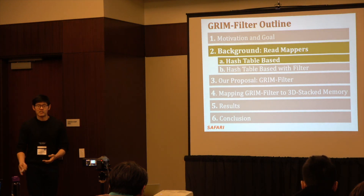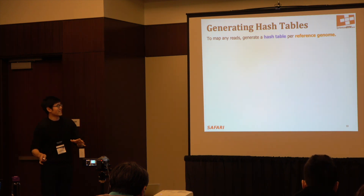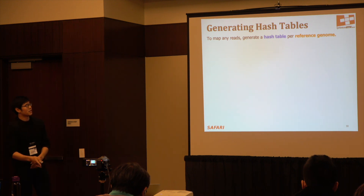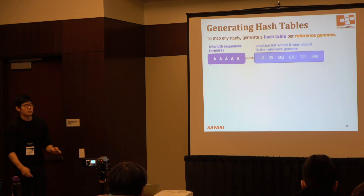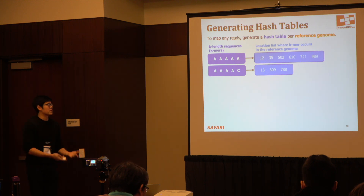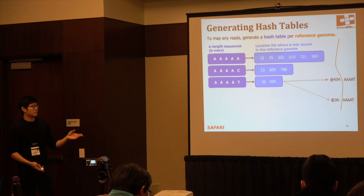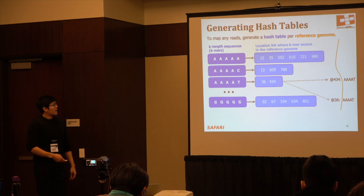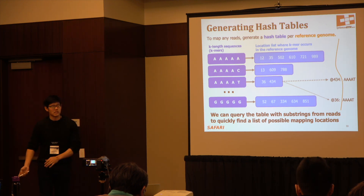To use a hash table in readmapping, we generate a hash table for the reference genome so we can map any number of reads to it. The hash table is comprised of keys that are k-length sequences, which we refer to as k-mers, and the values are the locations where these k-mers exist within the reference genome. In this example, our k-mer is of length five. We generate all possible permutations of 5-mers and their location list within the reference genome. For instance, 'AAAAT' exists at base pair number 36 and 434. We do this for every permutation, and then query this hash table to identify locations within the reference genome to map to.